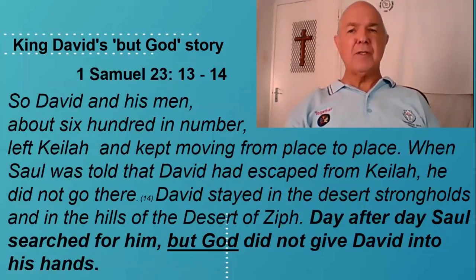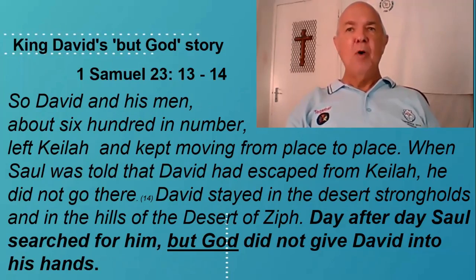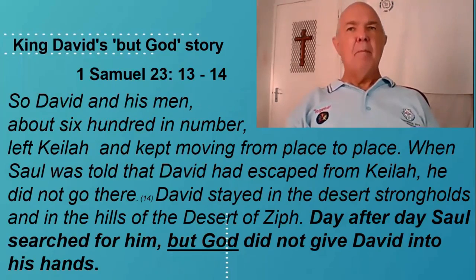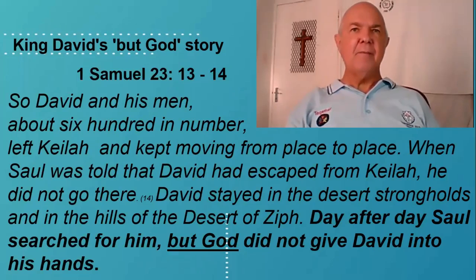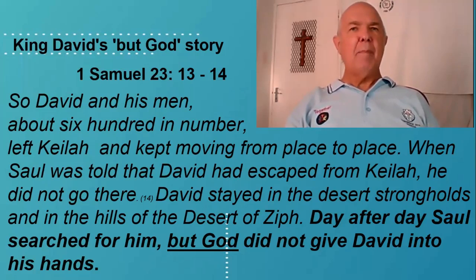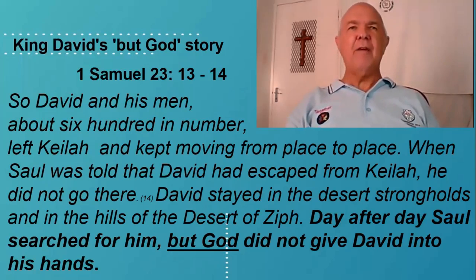We continue in verses 13 to 14: 'So David and his men, about 600 in number, left Keilah and kept moving from place to place. When Saul was told that David had escaped from Keilah, he did not go there. David stayed in the desert strongholds and in the hills of the desert of Ziph. Day after day, Saul searched for him, but God did not give David into his hands.' And so the running and hiding continues. Moving from place to place in the desert of Ziph, David and his men remained on the run from Saul. Day after day Saul searched for him, but God did not give David into his hand.